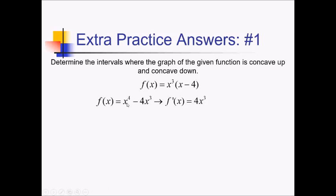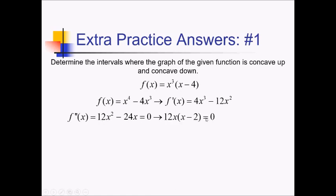So the first derivative is 4x cubed minus 12x squared. And now taking another derivative, that's going to be 12x squared minus 24x. Setting this equal to 0 and solving for critical values, we can factor out a 12x, leaving us with just x minus 2. So x is either 0 or 2 for critical values. Let's put those on an f double prime number line: 0 and 2.